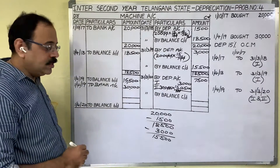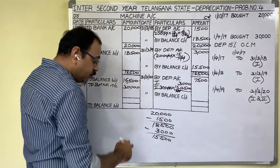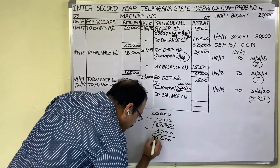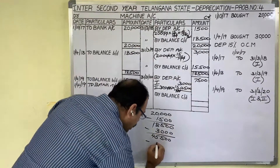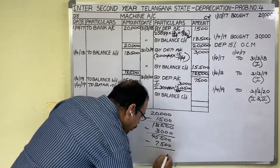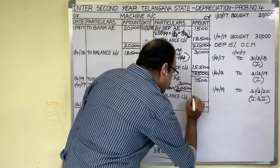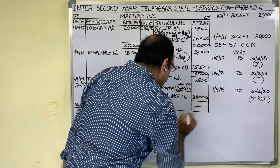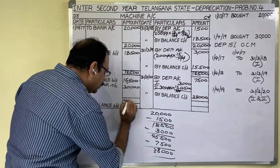Total depreciation in the outer column is 7,500. Find out the balance: debit total 45,500 minus credit total 7,500 gives a balance carried down of 38,000 rupees. Write totals on both sides.